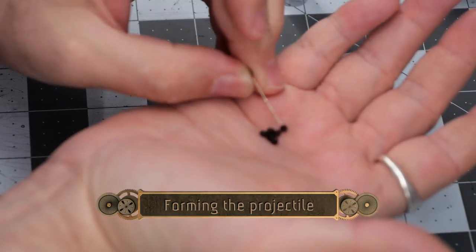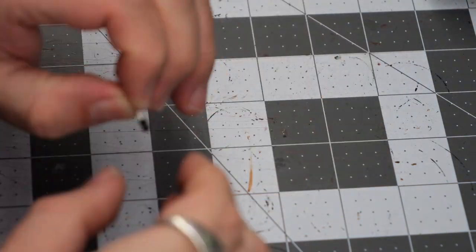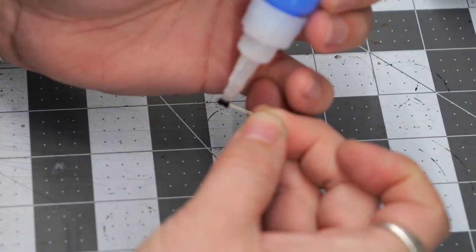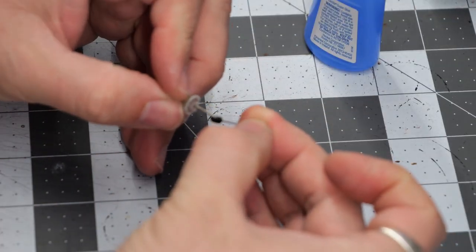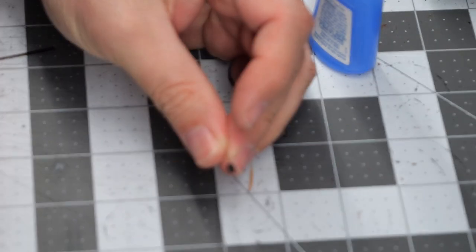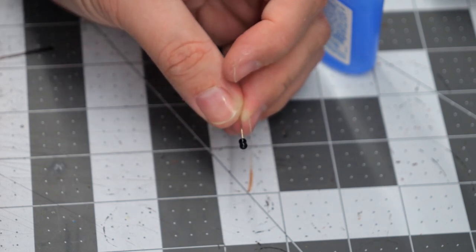We're going to start things off by forming the projectile for the grenade shot. We're going to do this by attaching a seed bead to the end of one of the pins, just by threading the seed onto the pin and gluing it in place. This will create an elongated section that'll be a nice little stand-in for a grenade.